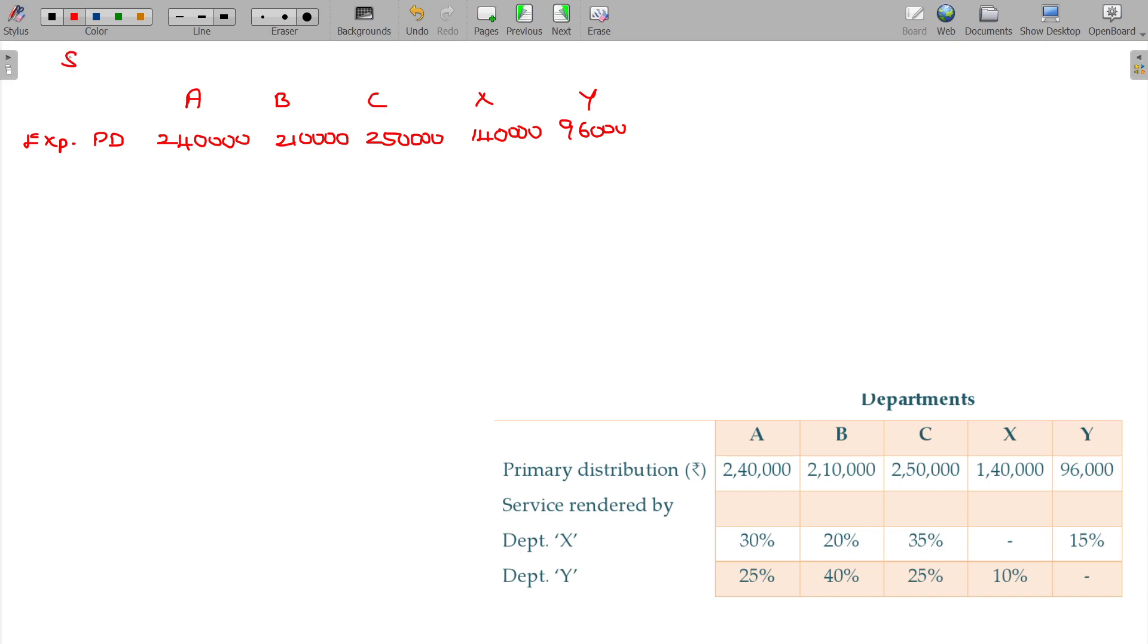I am going to use the simultaneous equation method. Now, X department - A, B, C, X, Y - how do you distribute it? 30 percentage, 20 percentage, 35 percentage, dash and 15 percentage. That is how the department X overhead is distributed to all other departments.